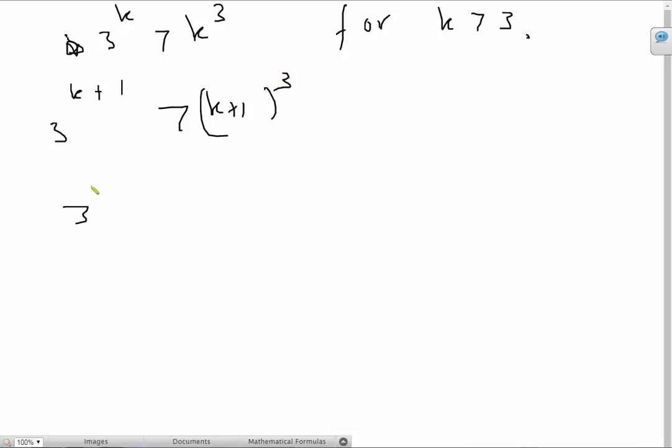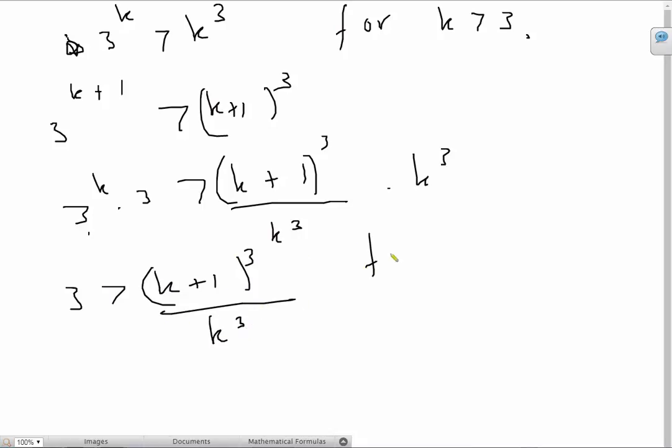And now I can simply write the left-hand side as 3 raised to k times 3. And I can write the right-hand side as k plus 1 cube divided by k cube times k cube. And since I know that 3 raised to k is greater than k cube, all that I have to prove is that 3 is going to be greater than k plus 1 cube divided by k cube for k greater than 3.